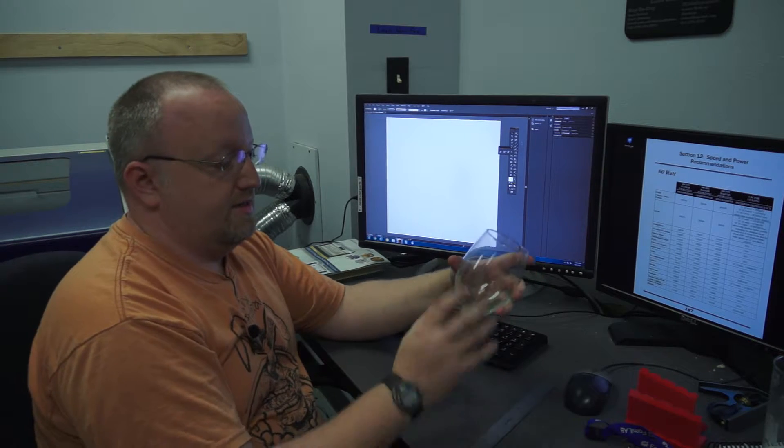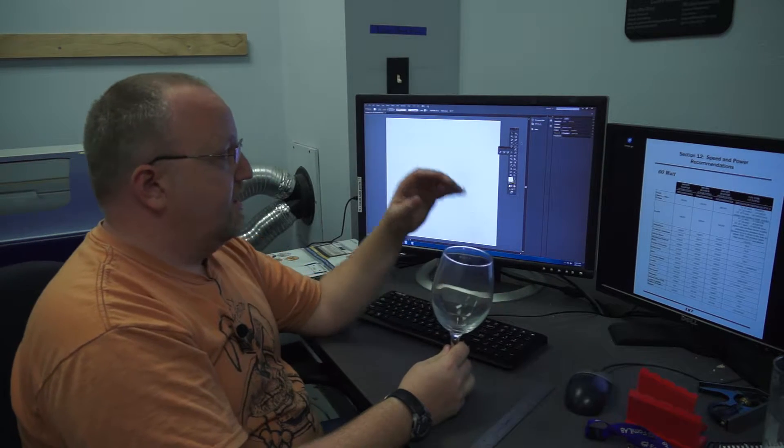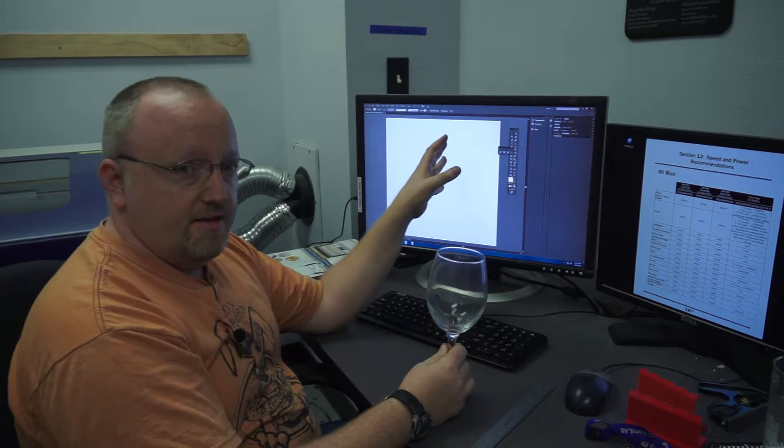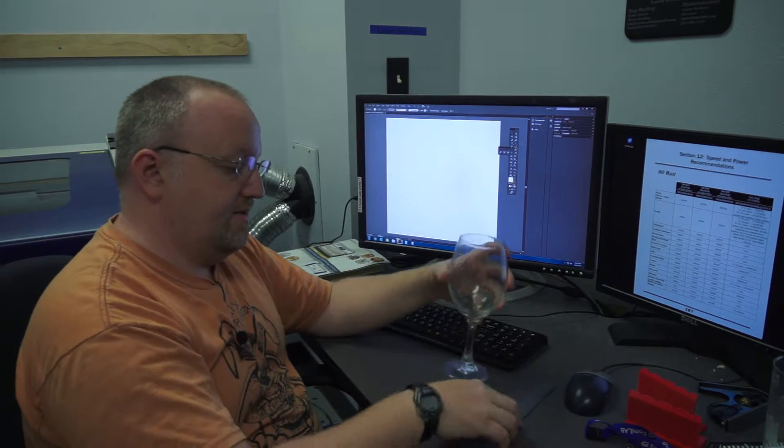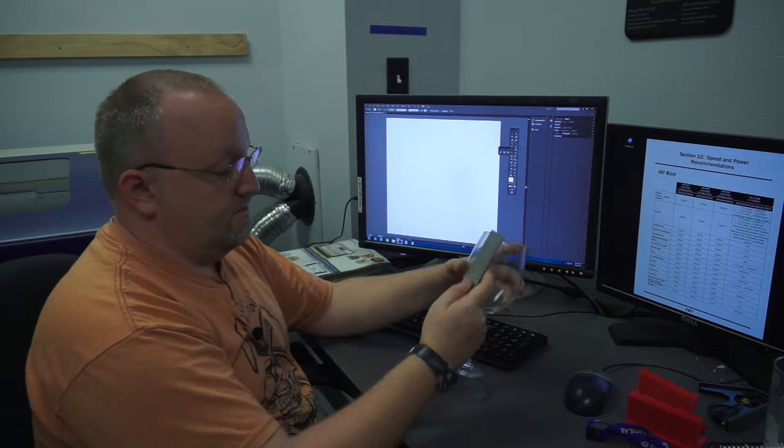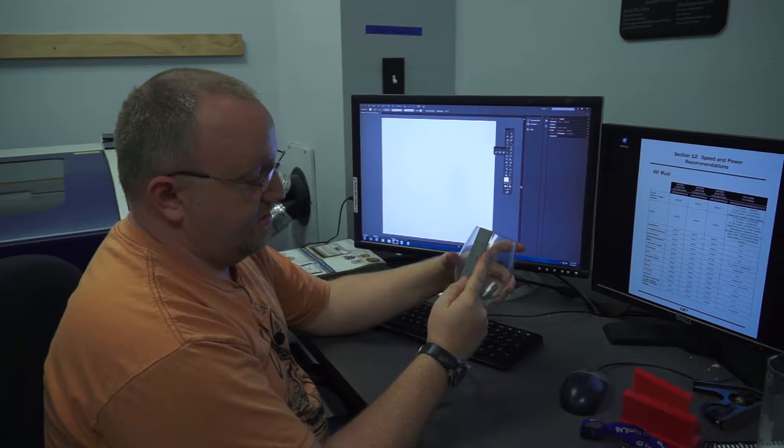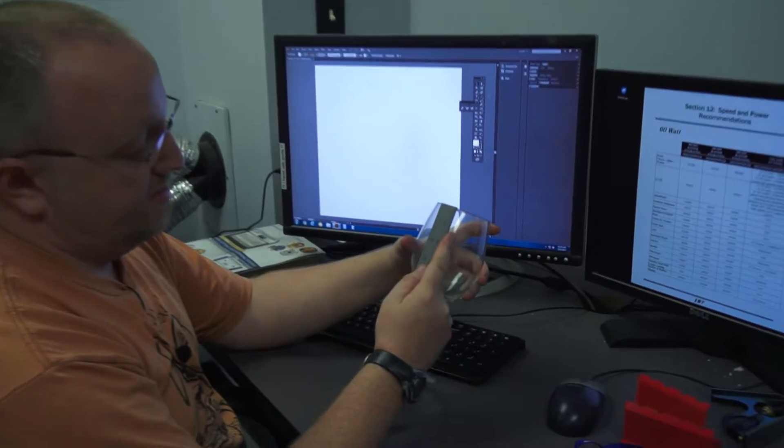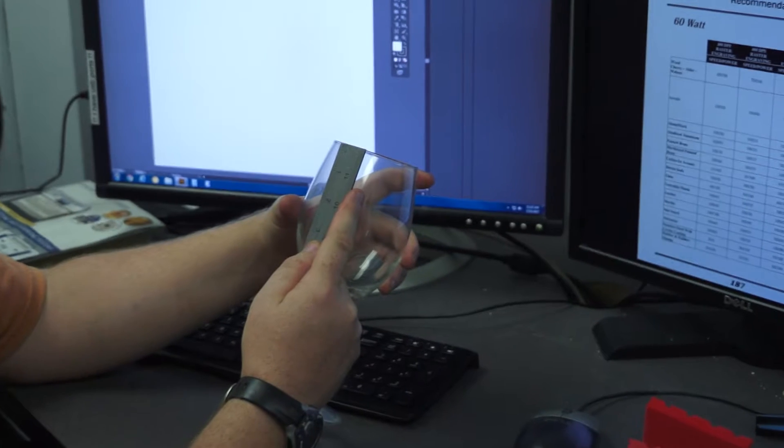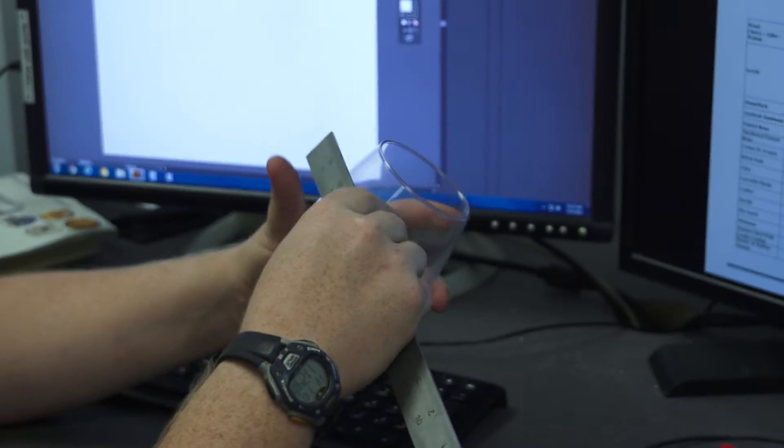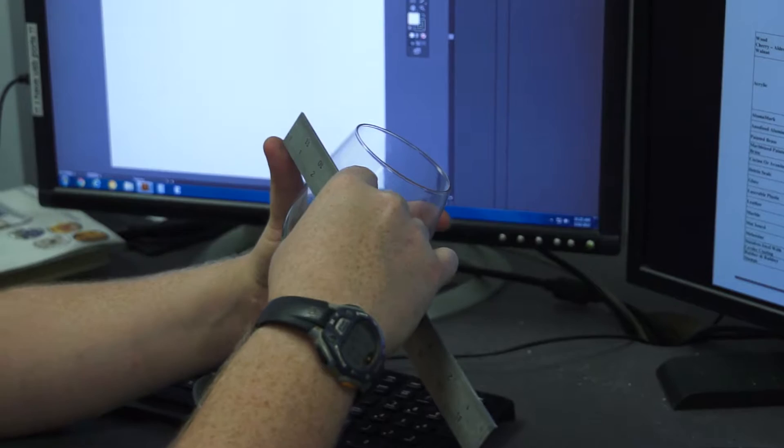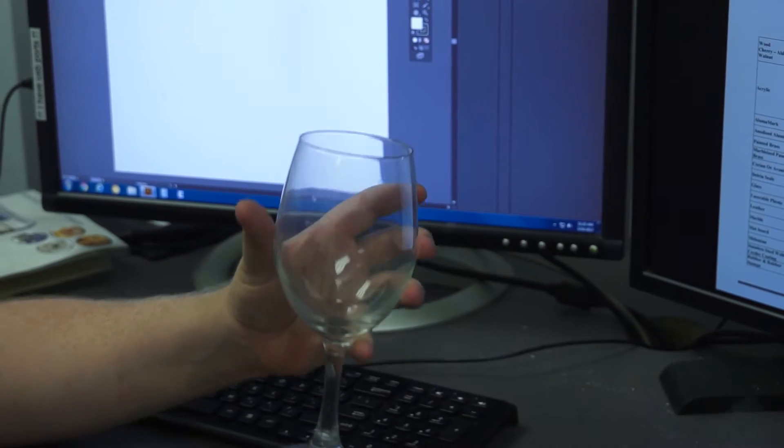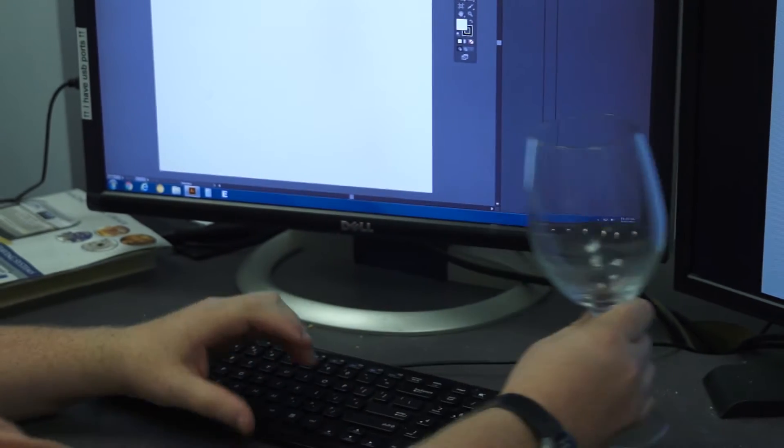The first thing we need to do is come up with the dimensions and put our graphic into Adobe Illustrator, which is what I use. It's usually the easiest. We want to measure here a little bit. I'm going to go about an inch down from the top and then make it about four and a half inches long. Let's go ahead and get started.